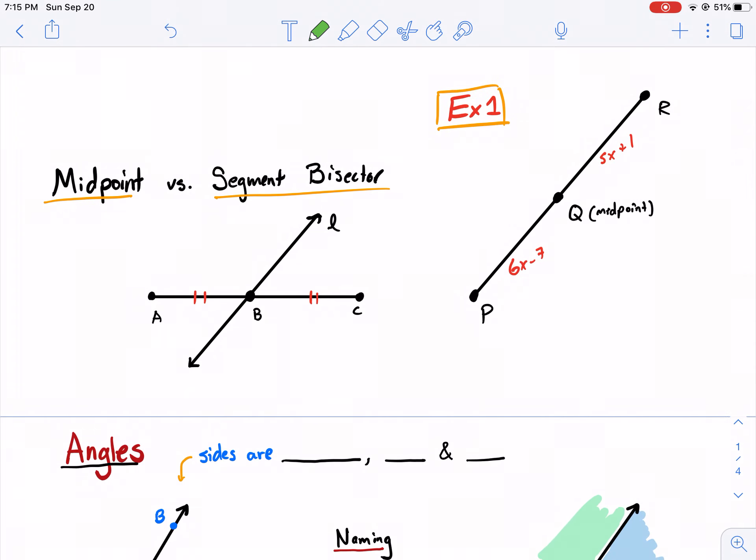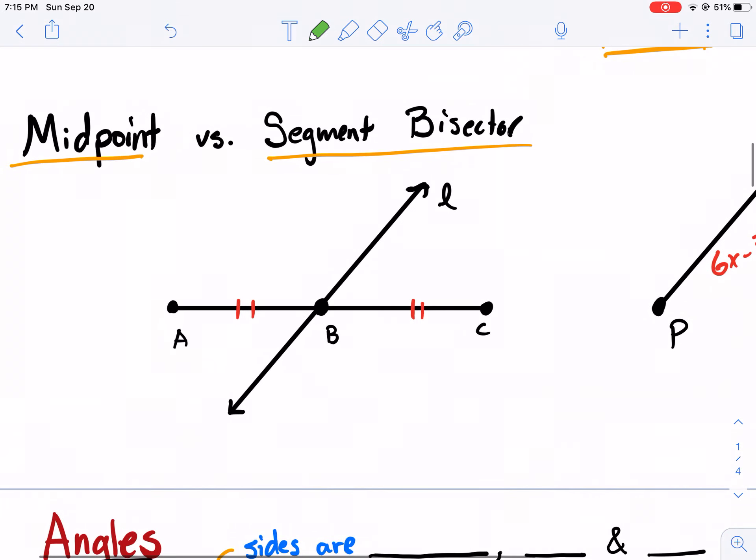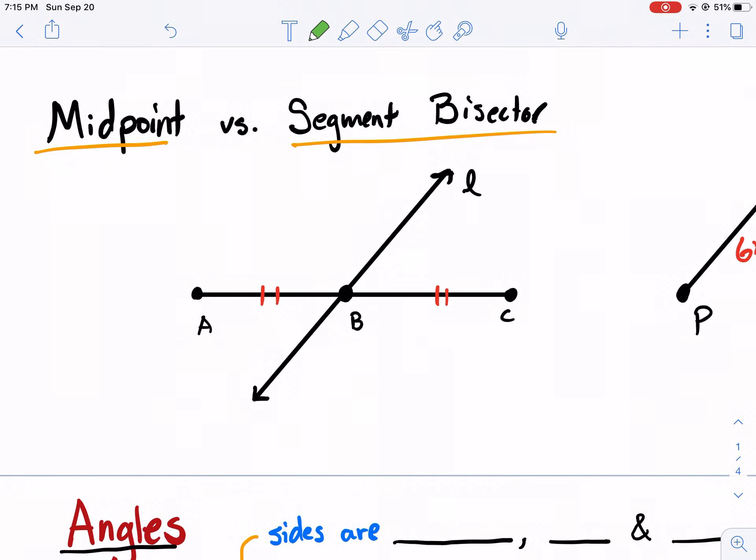Now we have midpoints and segment bisectors. This is an extension of kind of what we just learned. A midpoint. We're talking about the middle of a line segment, the middle of a line. Now what that means literally is that the segment is split into two equal parts. A midpoint splits a segment into two equal parts. And it's the point which it does that. So it's a point.